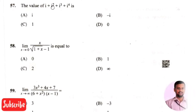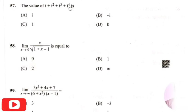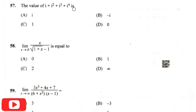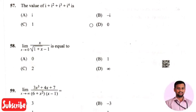The next question is the value of i plus i squared plus i cubed plus i raised to four — the right answer is option four, that is zero.